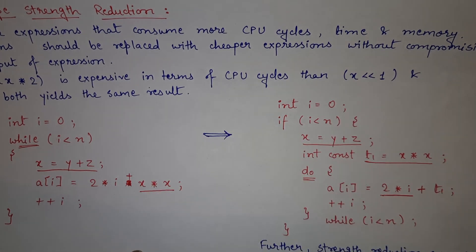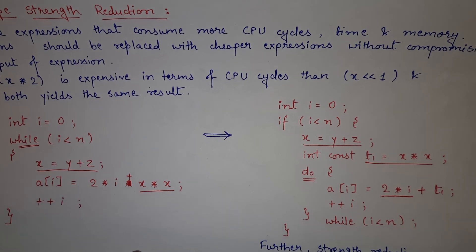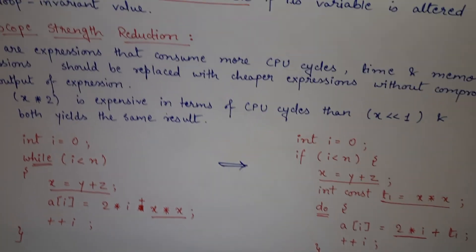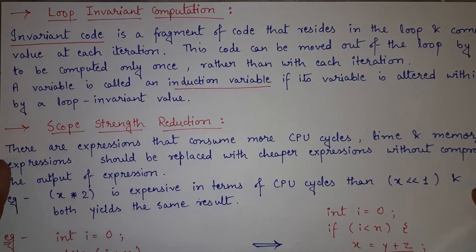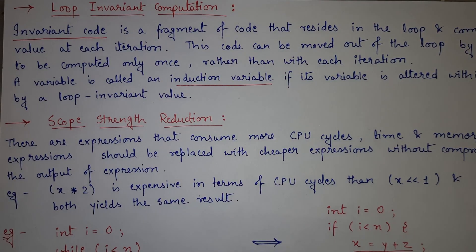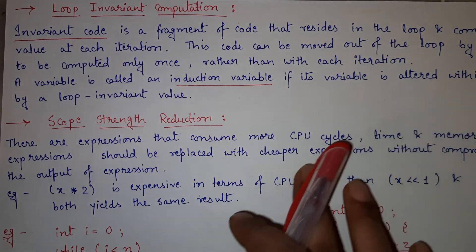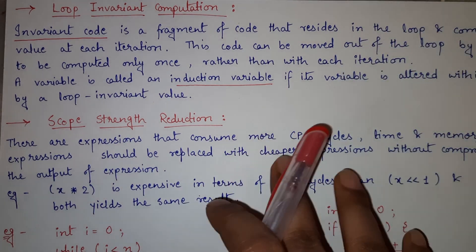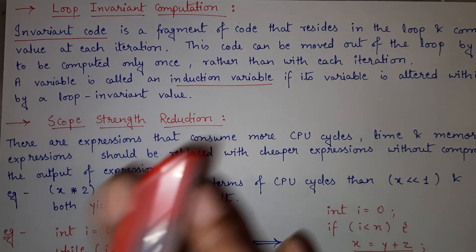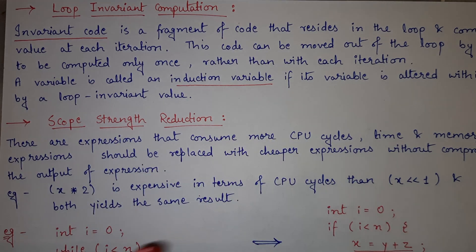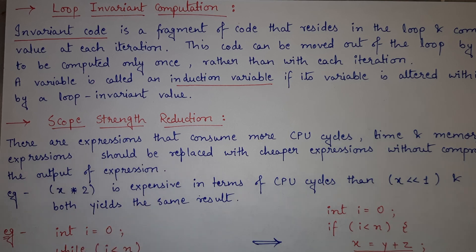So with the help of scope strength reduction and loop invariant computation, you can optimize your code to a great extent. I hope these two topics, which students usually think are very difficult, are now clear to you with the help of definitions, concepts, and examples. In case you still have any doubts, you can ask in the comment section. If you like the video, please hit the like button and share it with all your friends and classmates. Thank you so much.